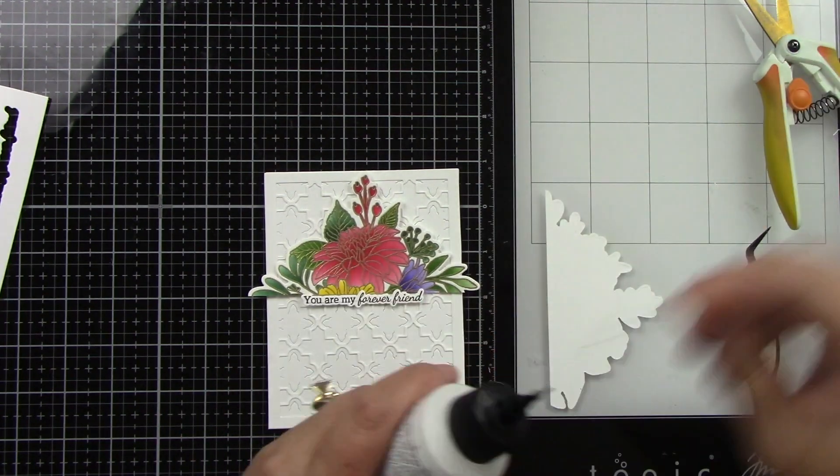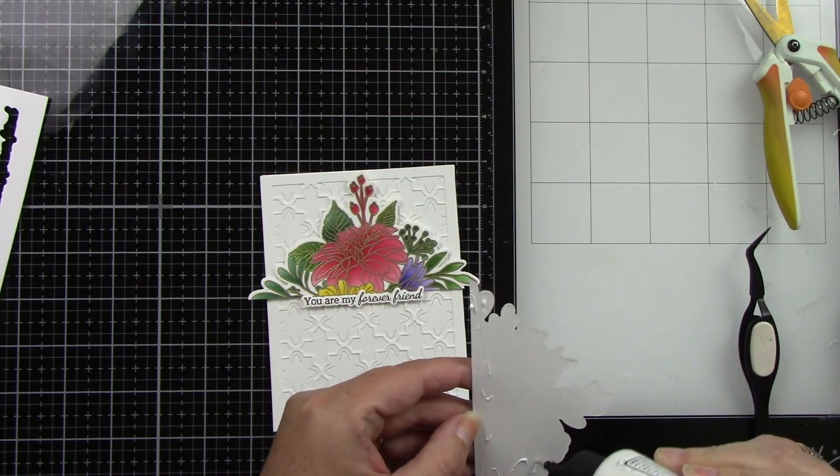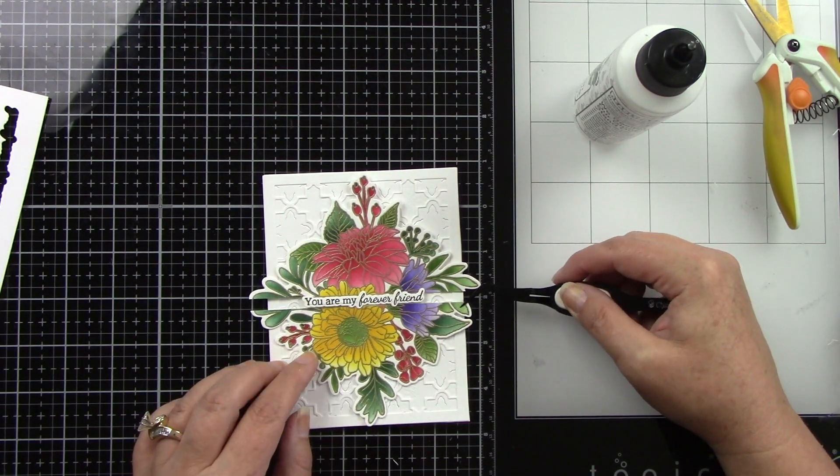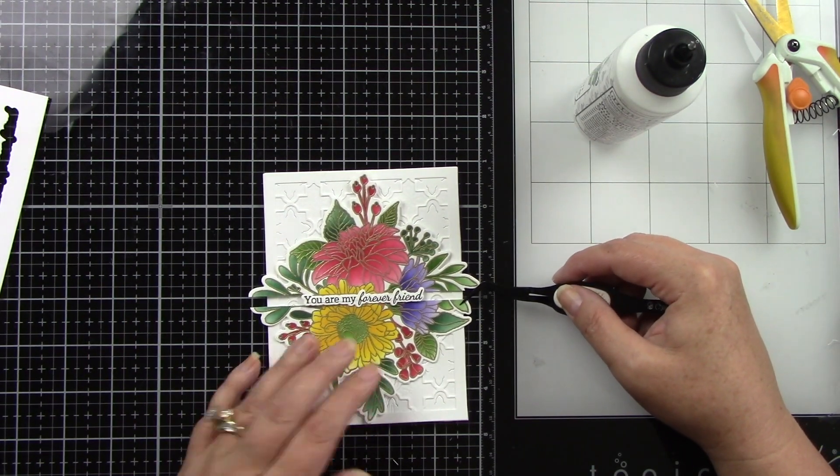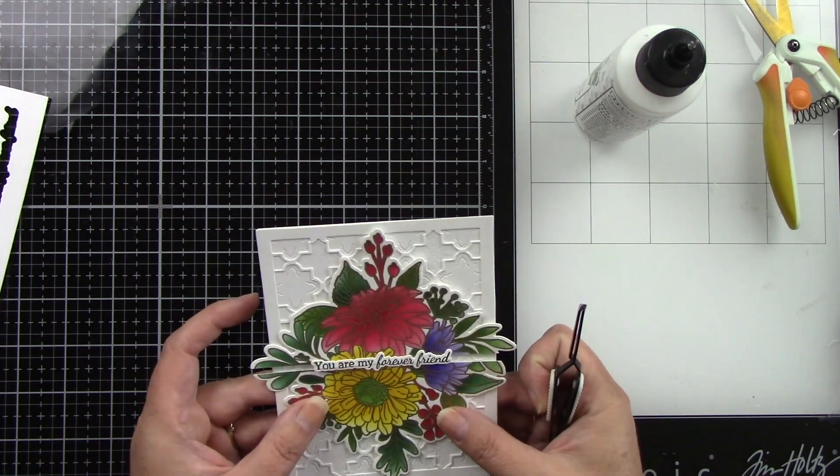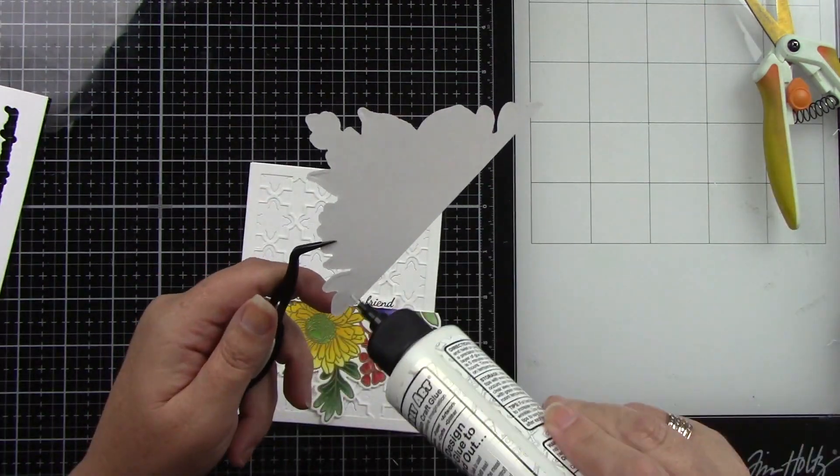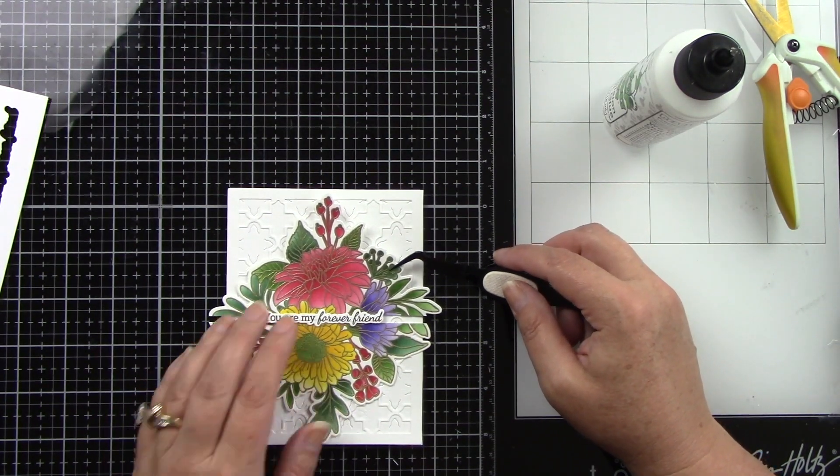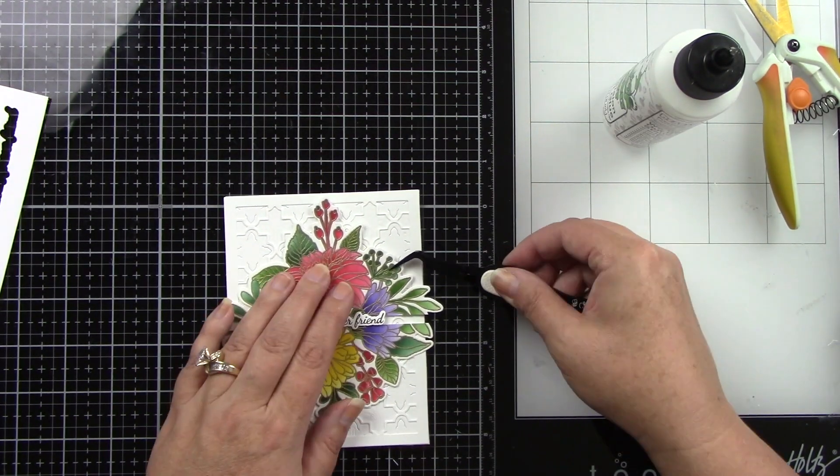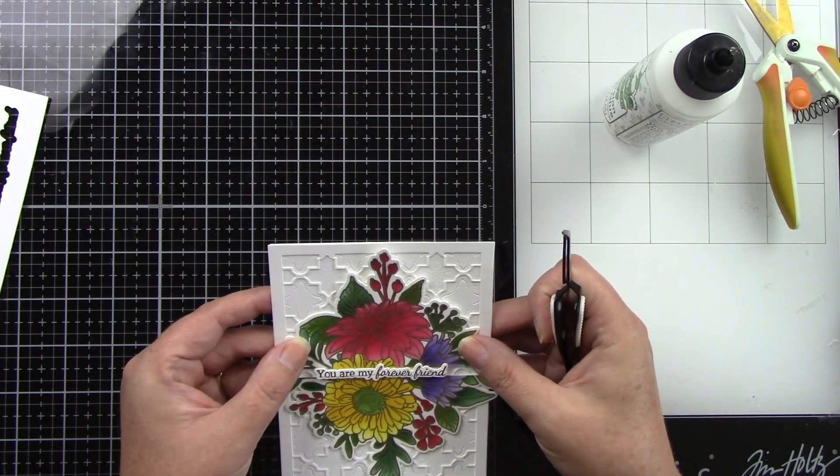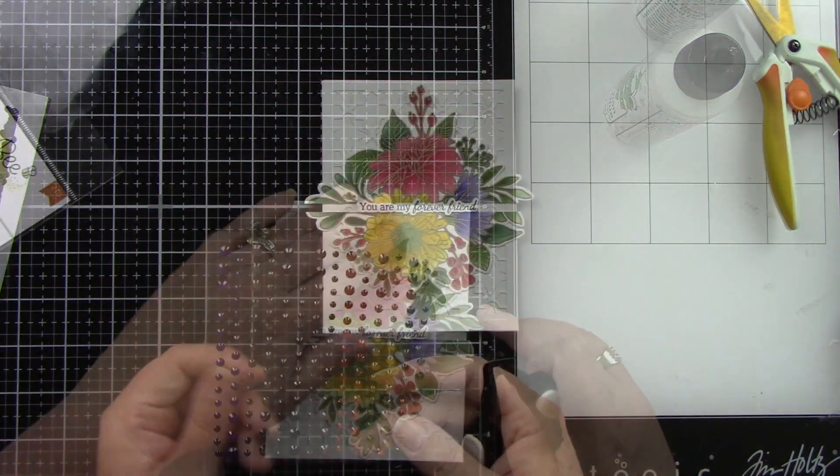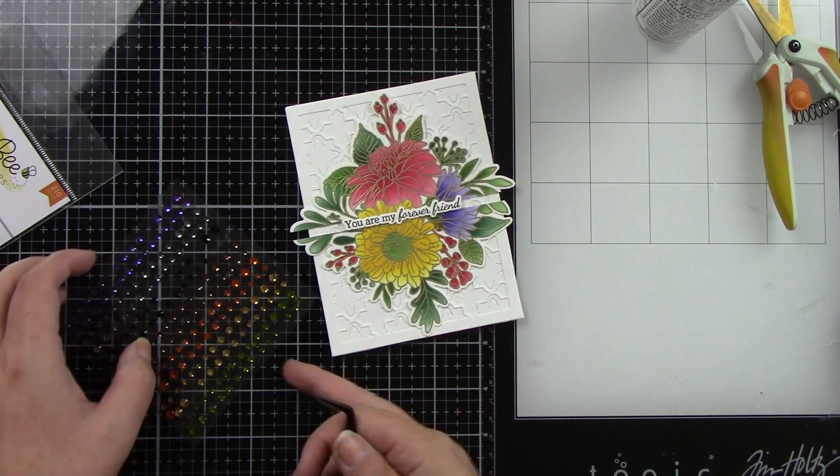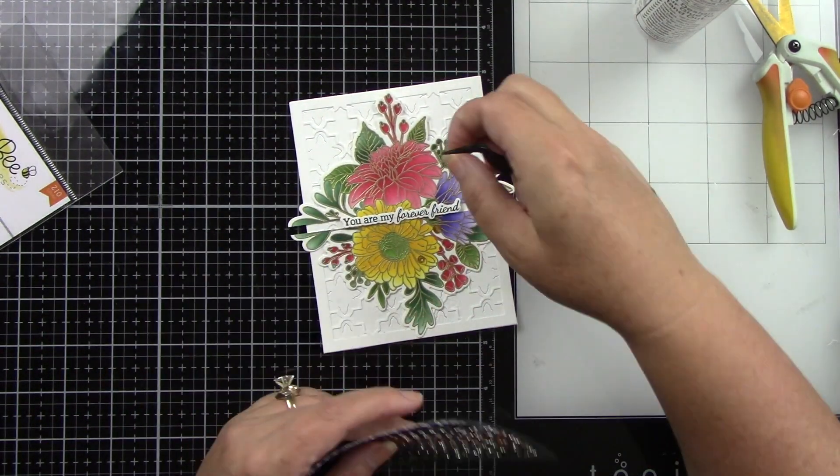I can adhere these with just some liquid glue. I totally forgot to grab Honeybee Stamps liquid glue, they have great liquid glue. This was just right in front of me. Now you can see that space there between the top and bottom florals. That's why I'm saying that could be fun with a pretty colored piece of cardstock behind it. I just didn't even think about it. I was just thinking the pretty white behind it, but you could do that if you didn't like the white.